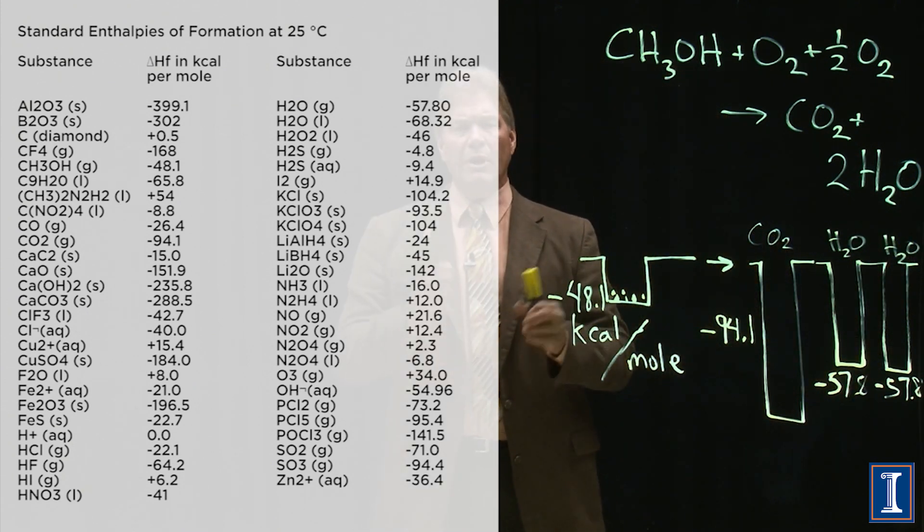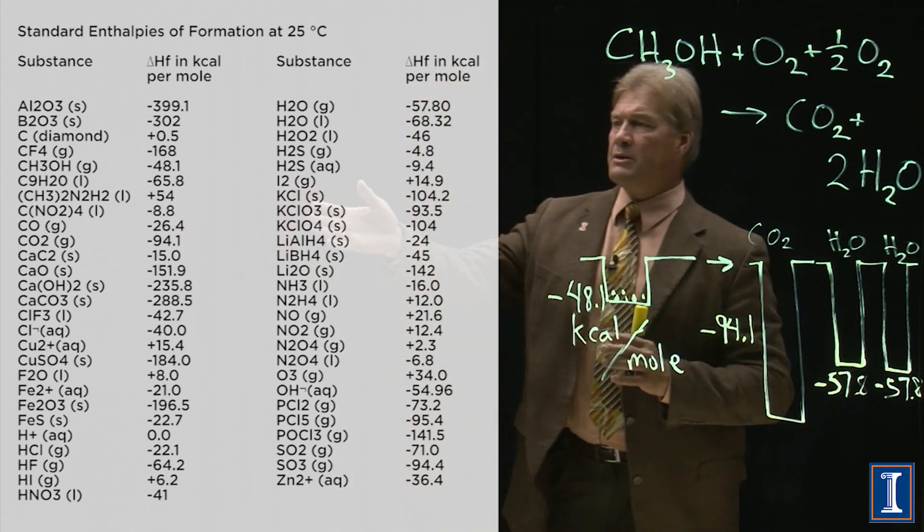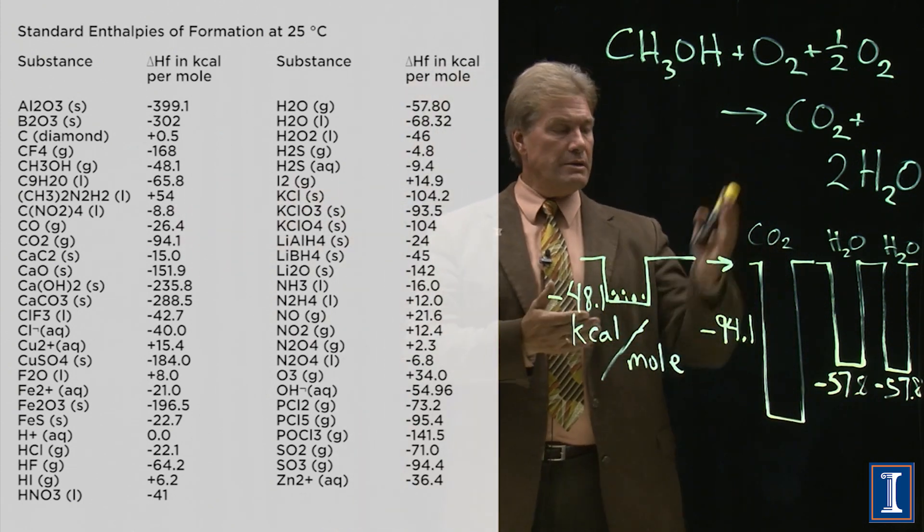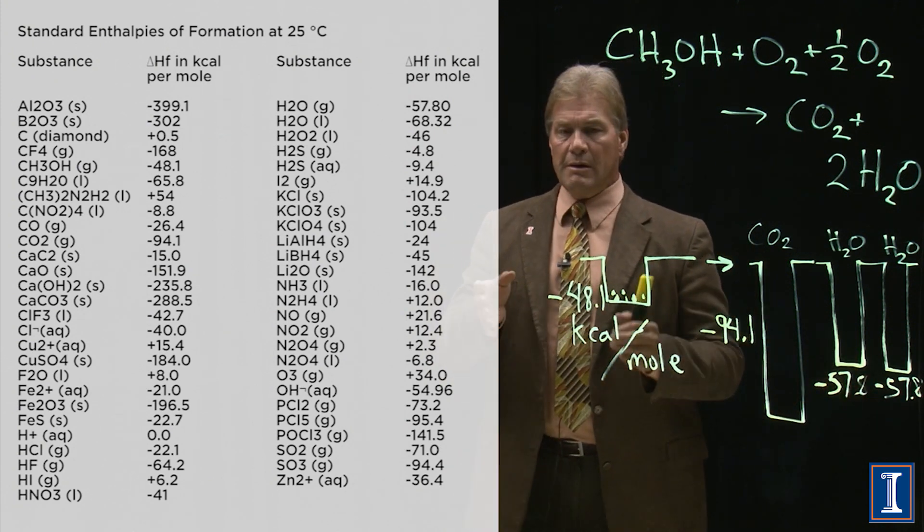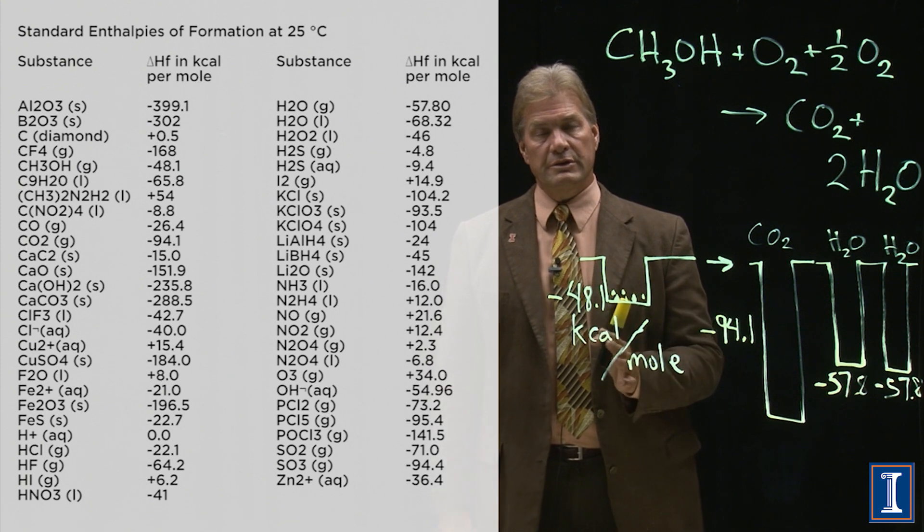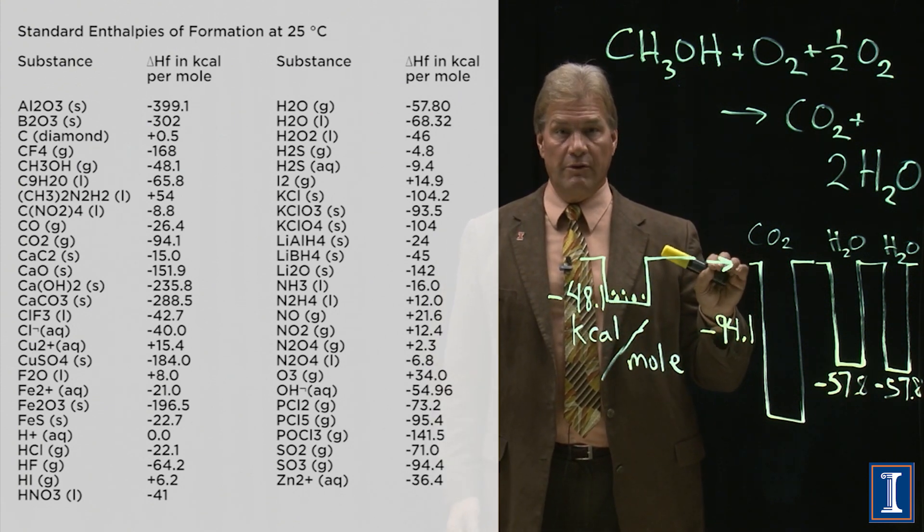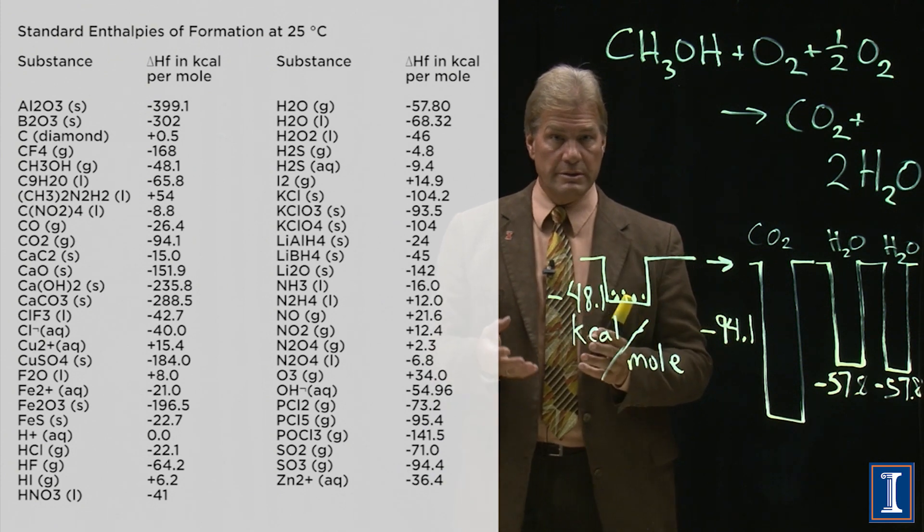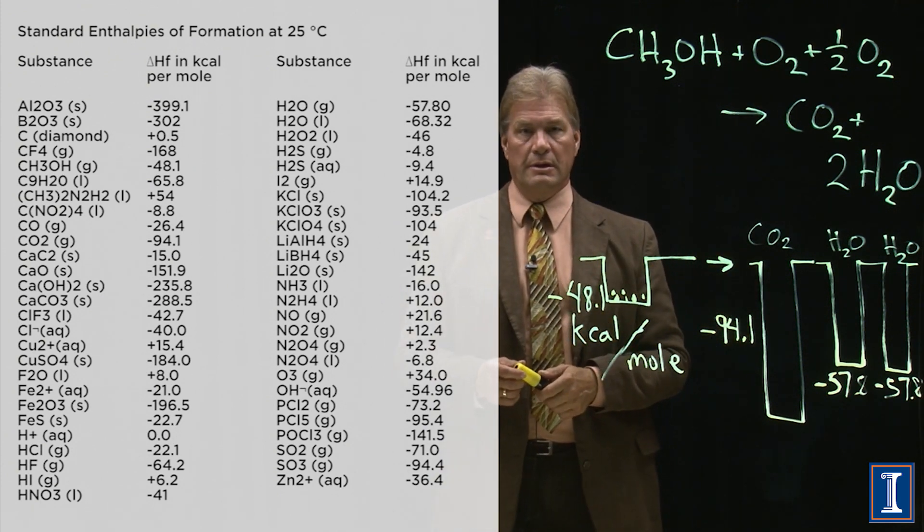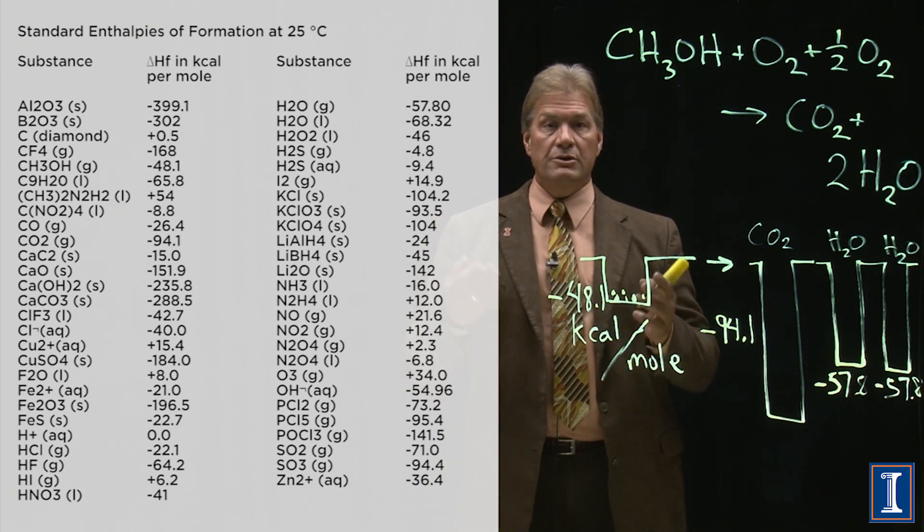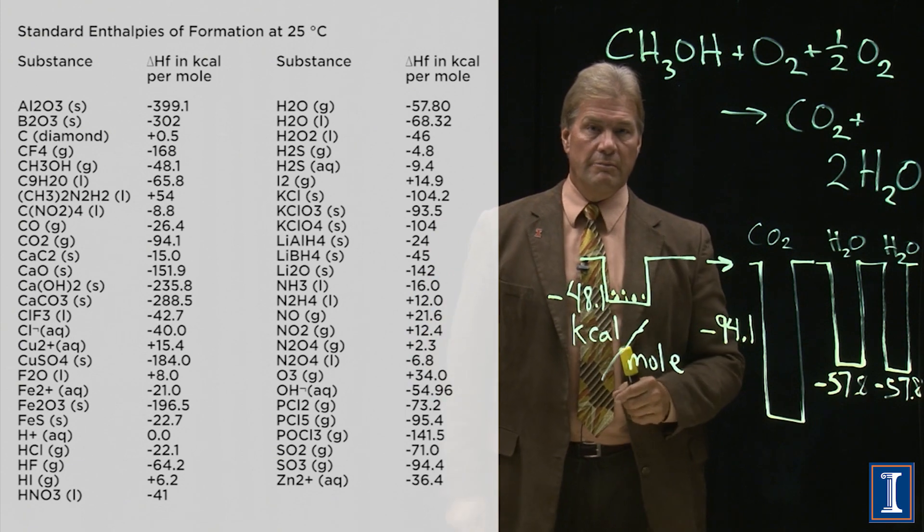Now, you might wonder, where's oxygen? Why isn't oxygen on this chart? Why didn't I make a well for my oxygen here? Well, you see, all these numbers are relative to something. And we put them relative to the oxygen level. Because most chemical reactions involve burning, which means combining with oxygen. And when we do that, we can just assume that oxygen is at zero. And that makes the math much easier.